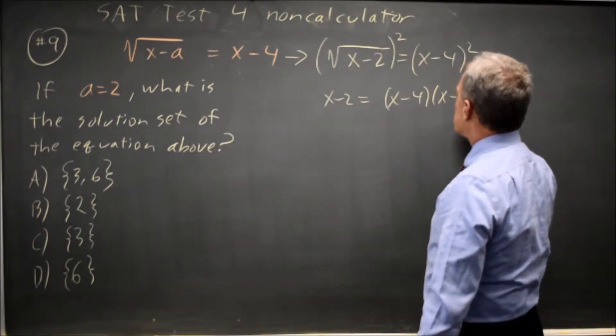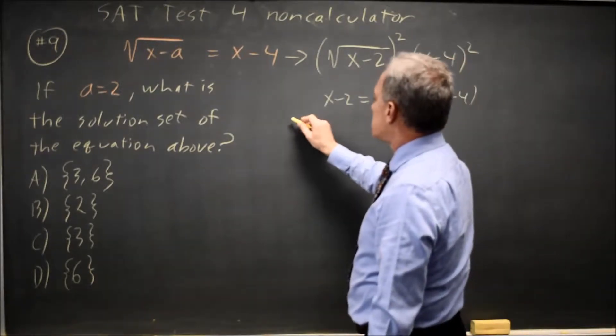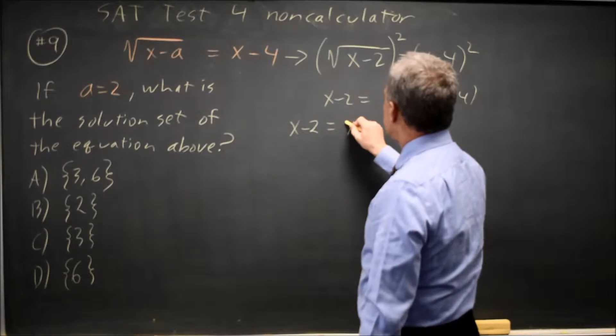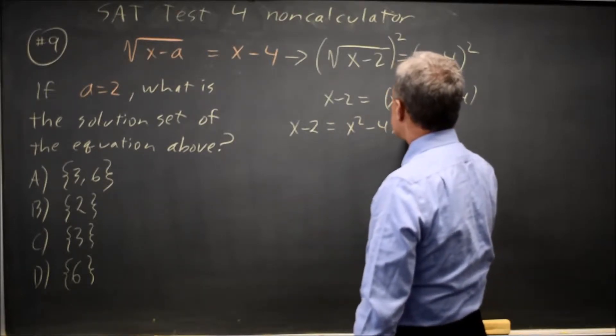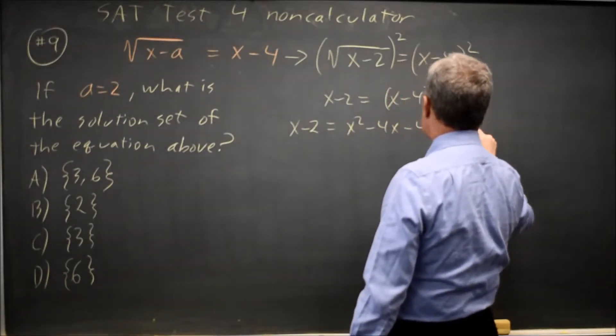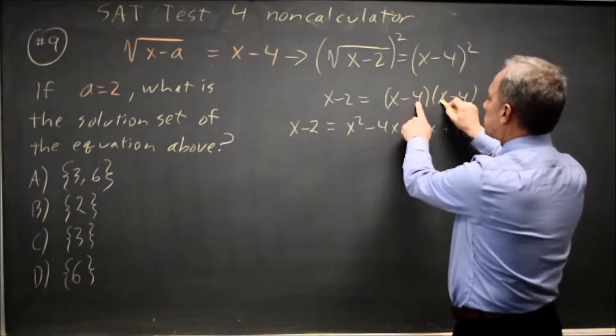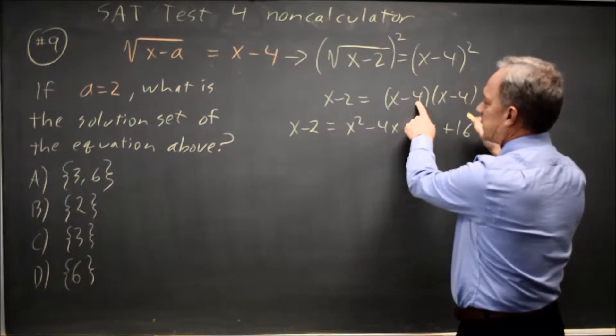I'm going to write that out for FOIL because there's too many mistakes with FOIL when we're under pressure. x squared minus 4x minus another 4x plus 16. That was first times first, product of the outsides, product of the insides, and then product of the last numbers.